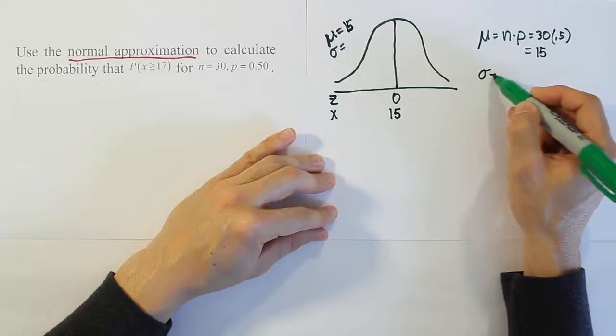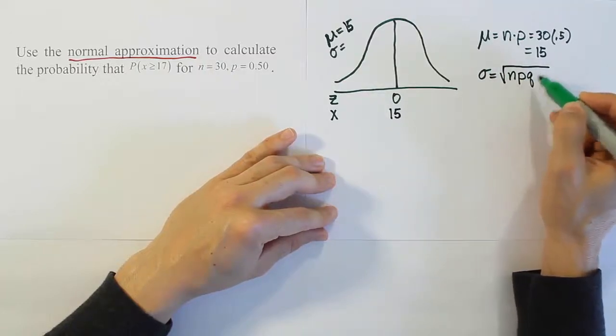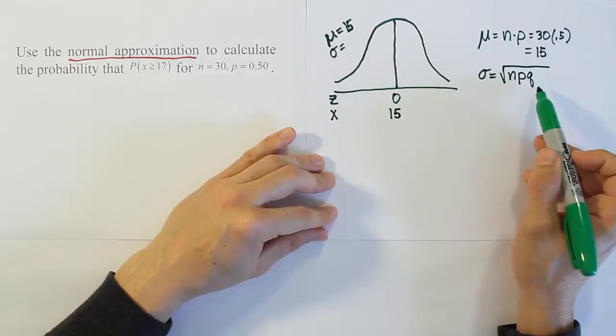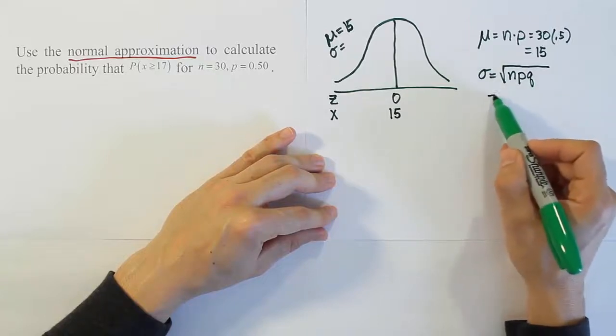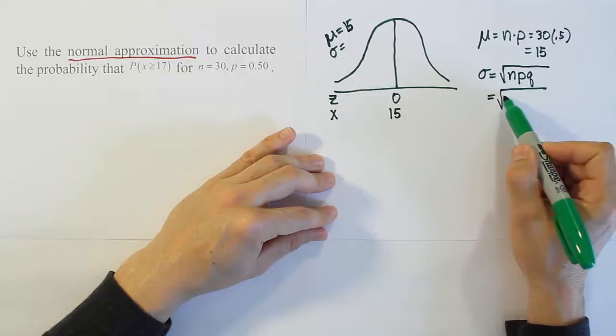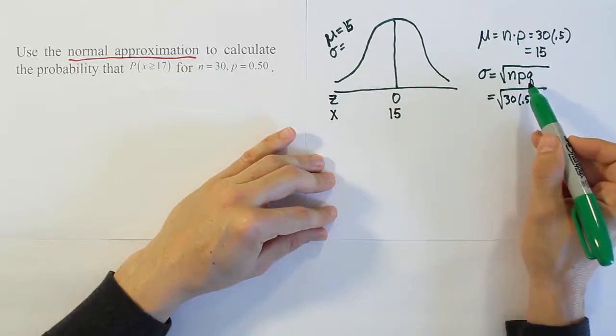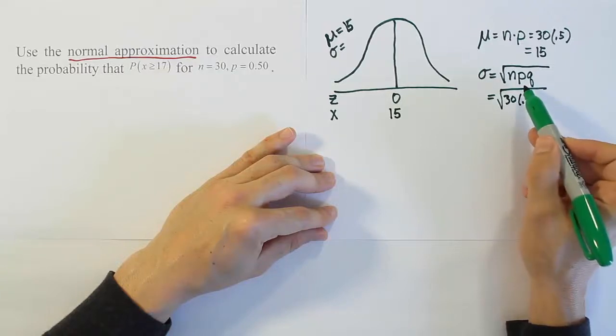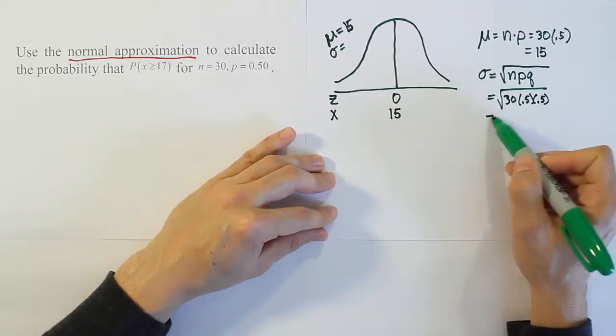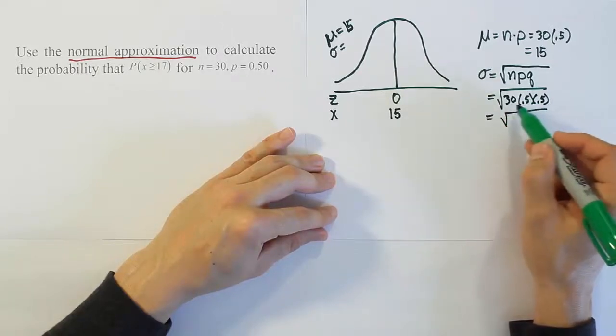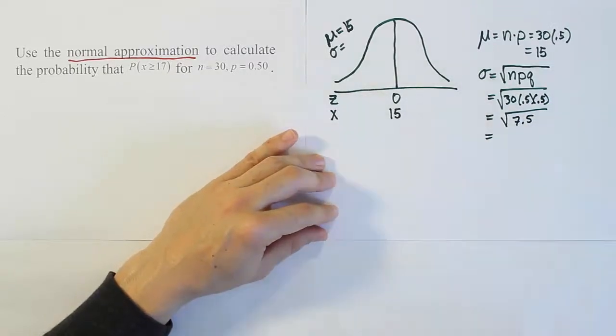Now the standard deviation for the problem is going to be the square root of n times p times q. These are formulas from back in Stats 1 where you learned the binomial probability formula. So n times p times q gives us the answer. Now n is going to be 30. p, we just said, was 0.5. q has to add to p to give you 100%. So if you have 50% for p, you must have 50% also for q. So the two of them add up to 100%. So we're basically going to get the square root of this is 15, then half of 15 is 7.5.